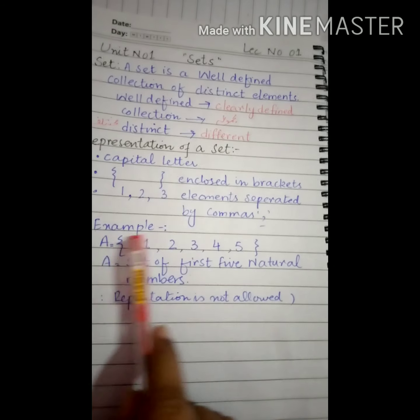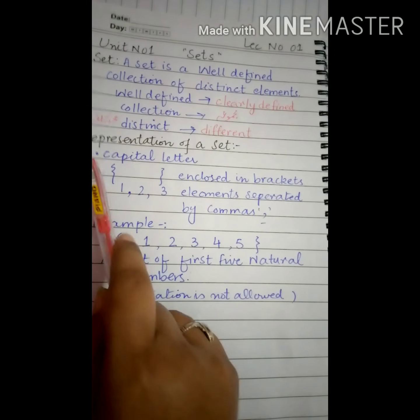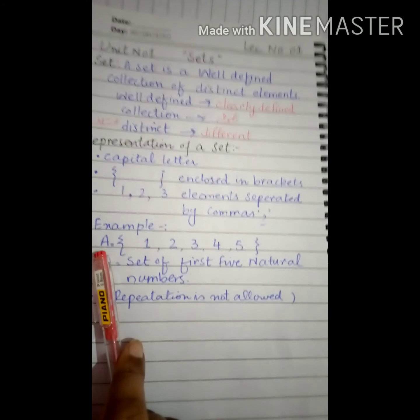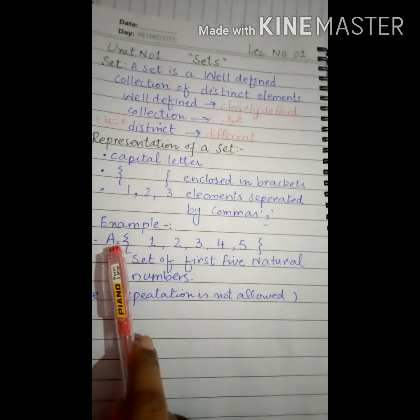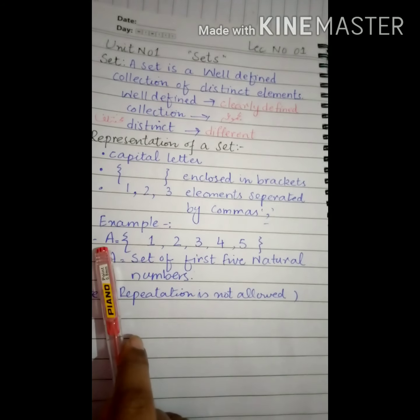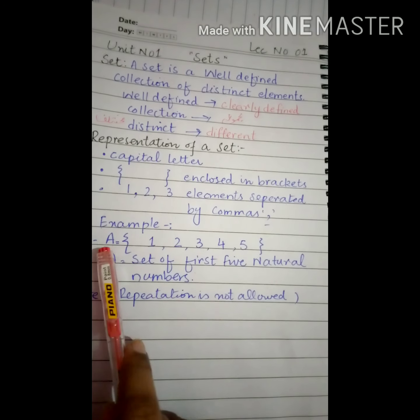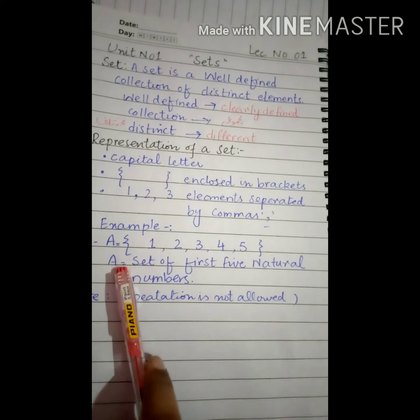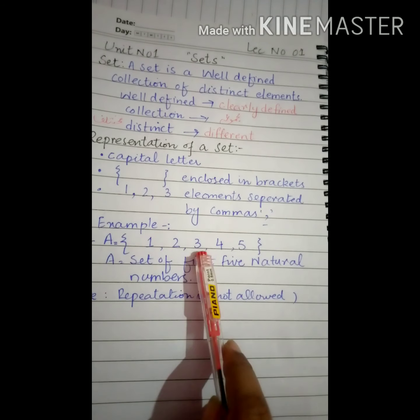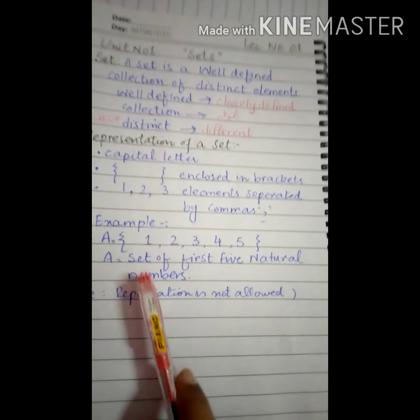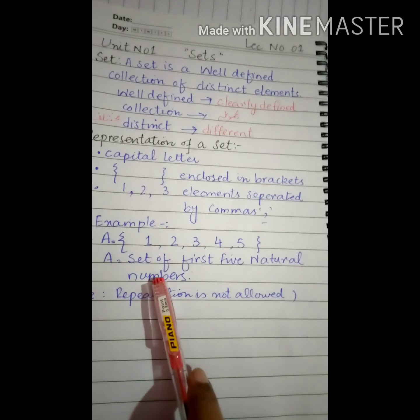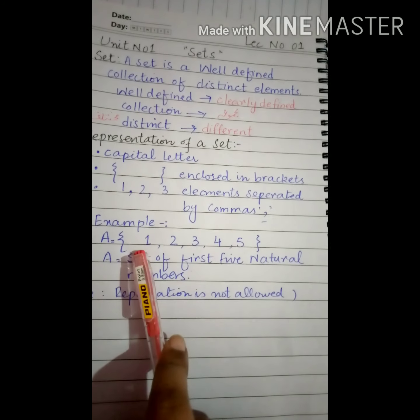Now, in the example I have written for you, all three rules are being applied. First of all, we have to write a set which we denote with A, and A should be capital - small a will not be used here. Capital A, then we have to put an equal sign, then you put braces, and then 1, 2, 3, 4, 5. Now what set is this? Set of first 5 natural numbers. Natural numbers always start with 1.